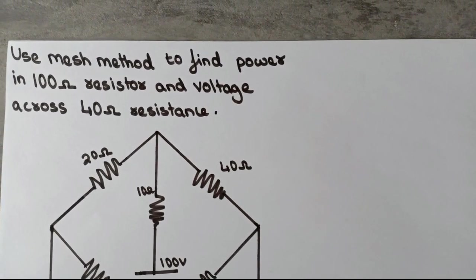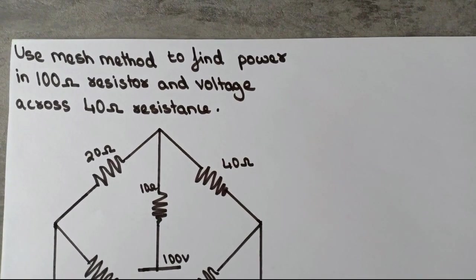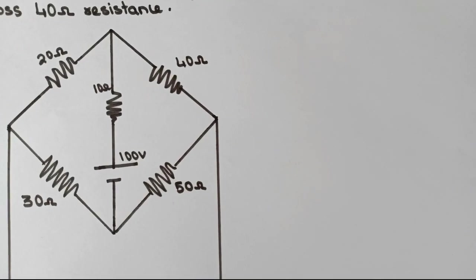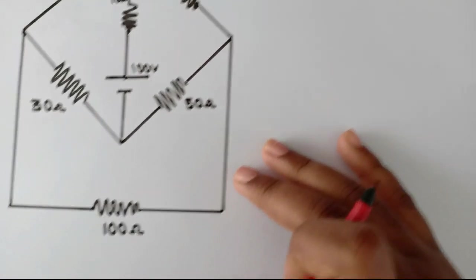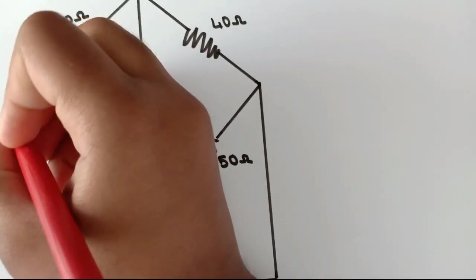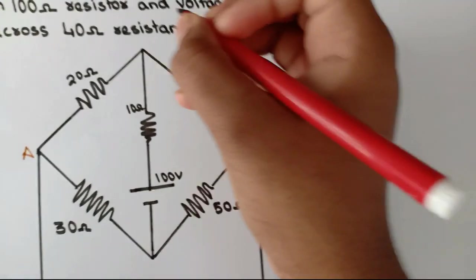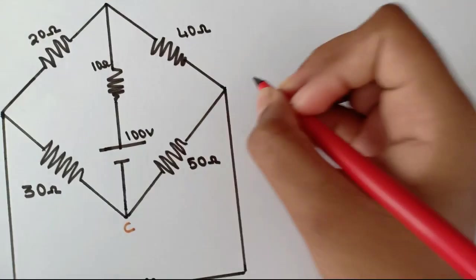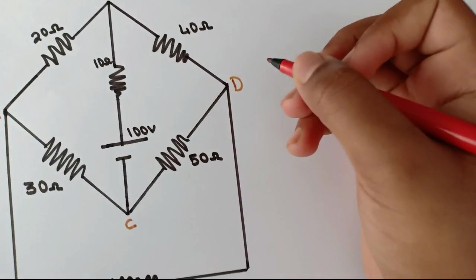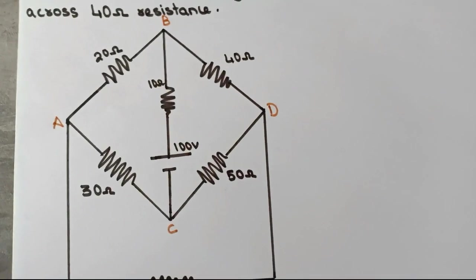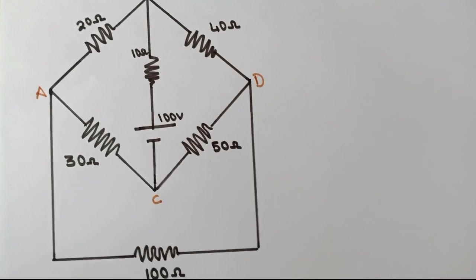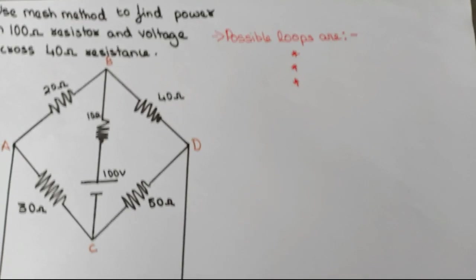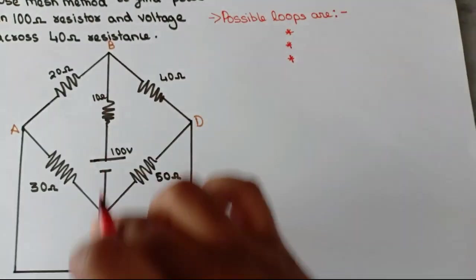We need to find the power in the 100 ohm resistor and voltage across the 40 ohm resistance. First we need to mark the branches. Let's start from points A, B, C, D. Next we need to write down the possible loops. In this question we have three possible loops — one, two, three loops.